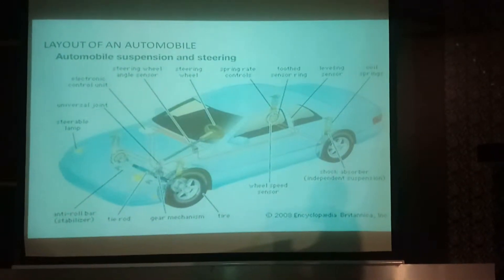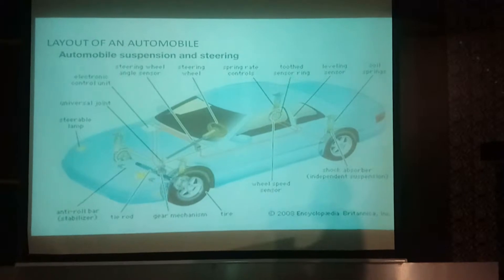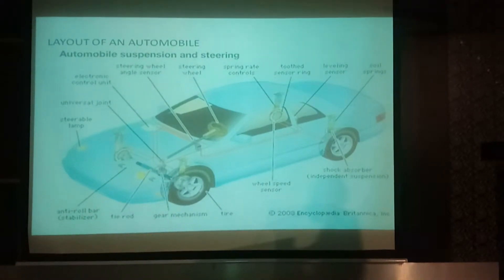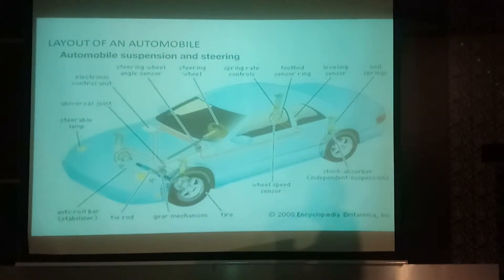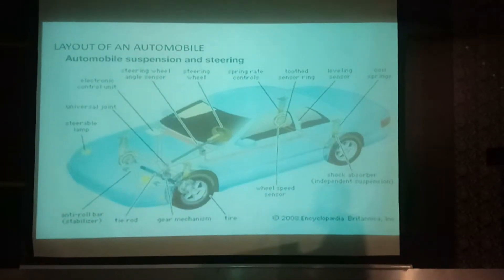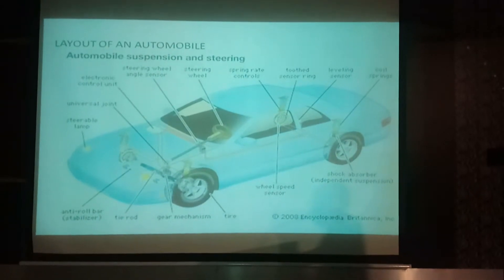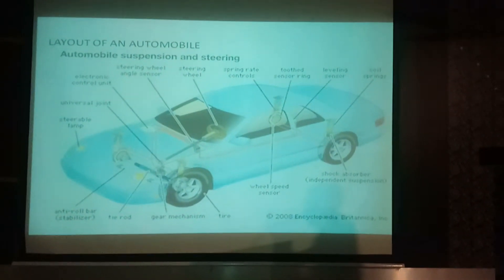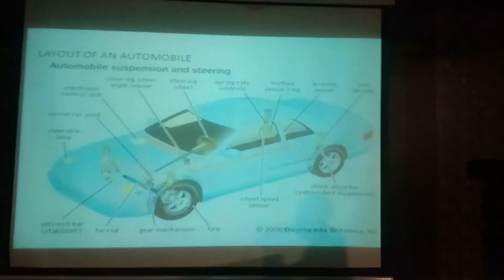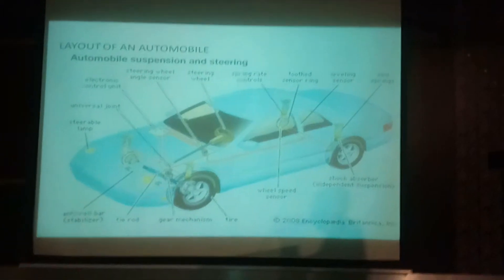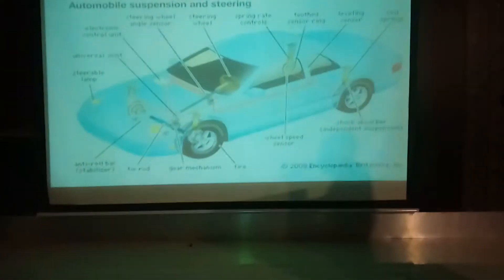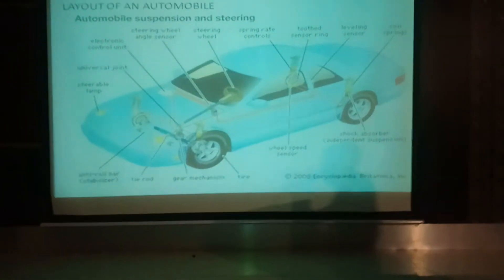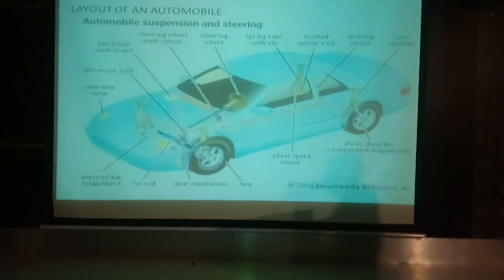Now, anatomy of automobile and layout of automobile. So under the layout of automobile, suspension and steering. Here, a car is an example in which the locations of different parts are shown.